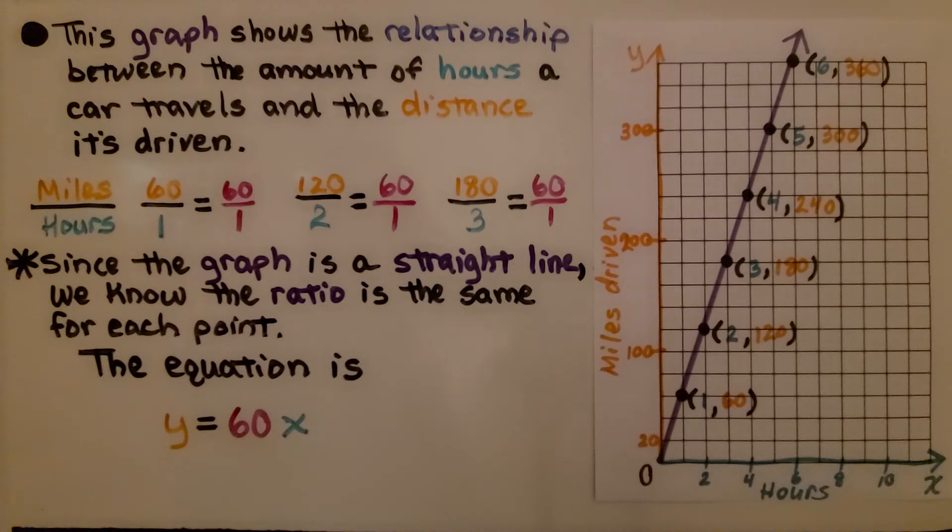Here we have another graph. This graph shows the relationship between the amount of hours a car travels and the distance it's driven. We have miles to hours. It's going to be 60 to 1.